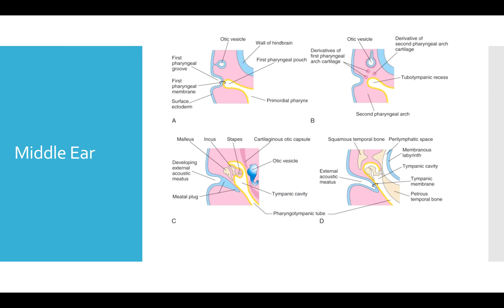The middle ear has origins in both the first and the second pharyngeal arch. The first pharyngeal arch begets the adult malleus and incus. And the second pharyngeal arch mesenchyme begets the stapes.